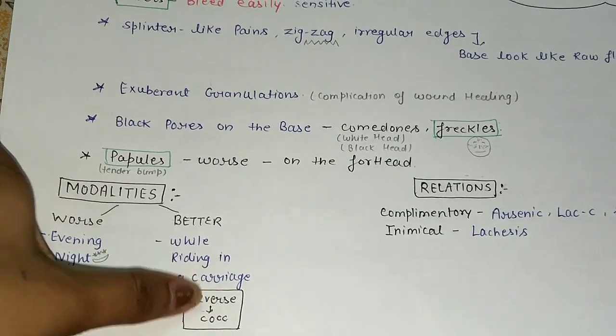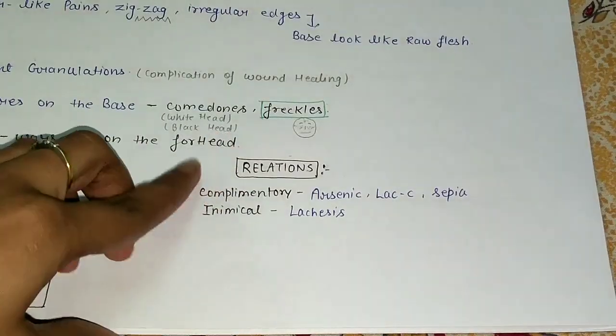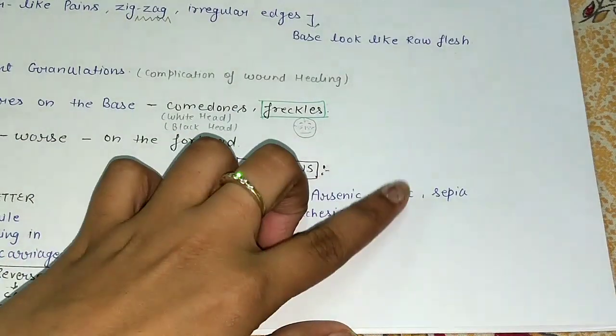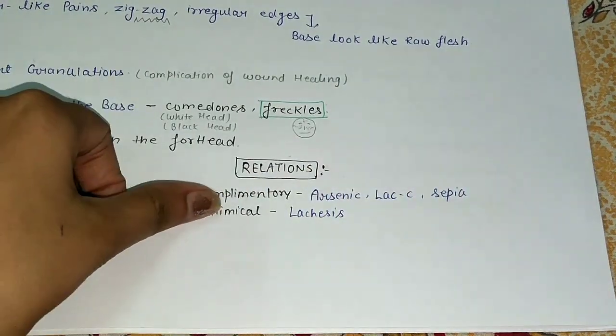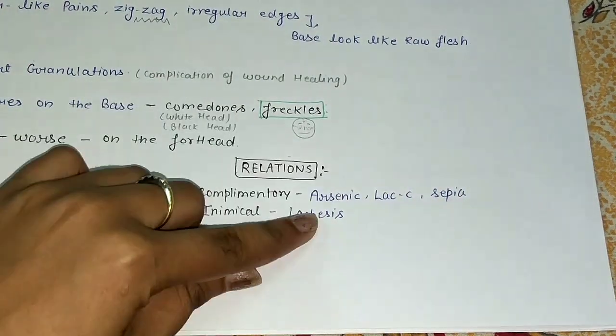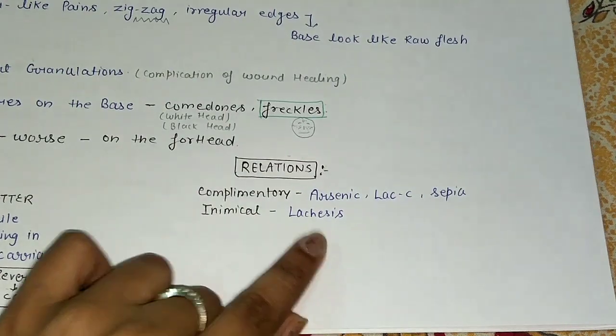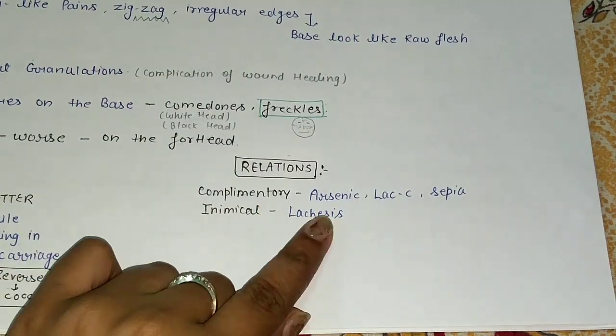After that, relationships. It's complementary with Arsenic, Lachesis, and Sepia. Inimical to Lachesis. So always remember the inimical of any medicine. Nitric Acid is inimical to Lachesis.